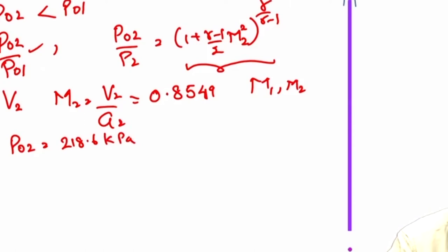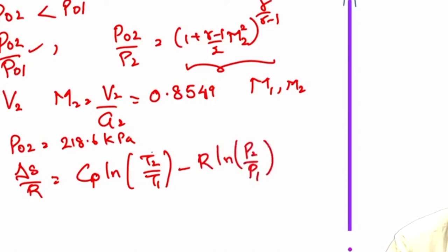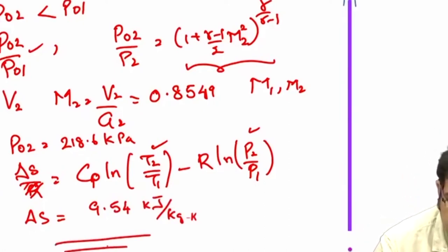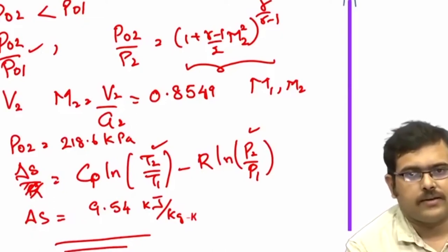Now what is the change in entropy across the shock? Delta s by R, this is Cp log T2 by T1 minus R log P2 by P1. Both of these quantities are calculated. You can calculate delta s. Delta s is equal to 9.54 kilo joules per kilogram Kelvin. Now we have solved this problem, let us go to the second problem.